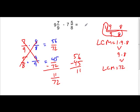So the fraction part of this is going to be 11 over 72. But we're not done yet because we still have this to subtract. We have 9 minus 7, and 9 minus 7 equals 2. So 9 and 7 ninths minus 7 and 5 eighths equals 2 and 11 over 72.